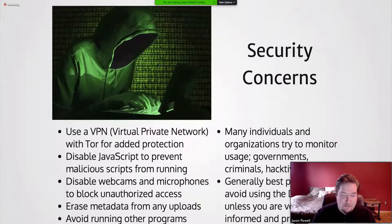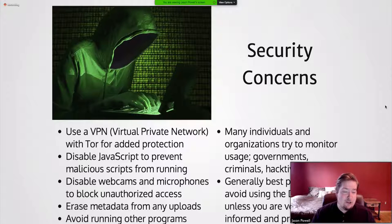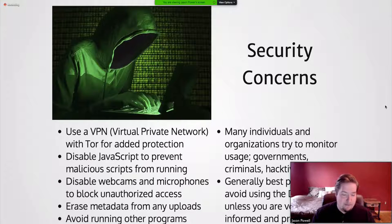Security concerns: there are many individuals seeking to harm you or steal your information on the dark web. You want to use a VPN — a virtual private network — with Tor for added protection, adding another layer to mask the origin of requests. Disable JavaScript to prevent malicious scripts from running, since many attacks are made possible by JavaScript — by default in the Tor browser JavaScript is disabled. Disable webcams and microphones to block unauthorized access. A lot of people have unsecured webcams that can be accessed by free services on the internet, including public security cameras.